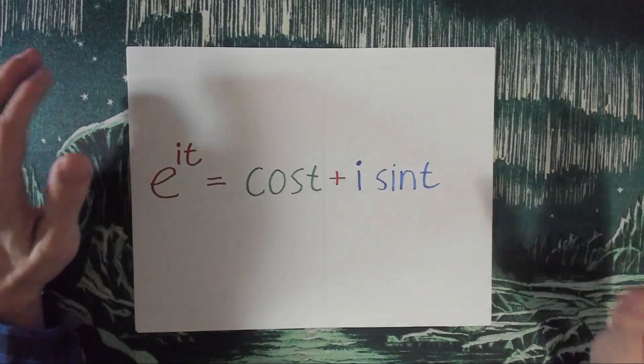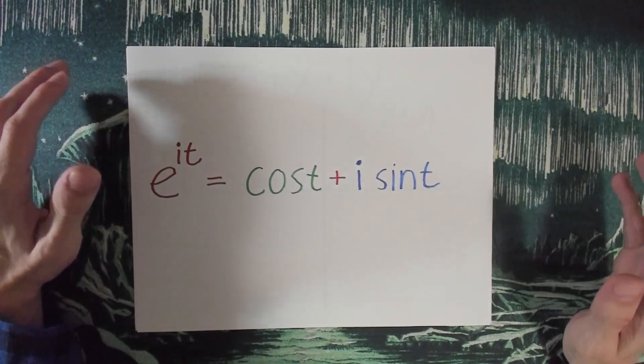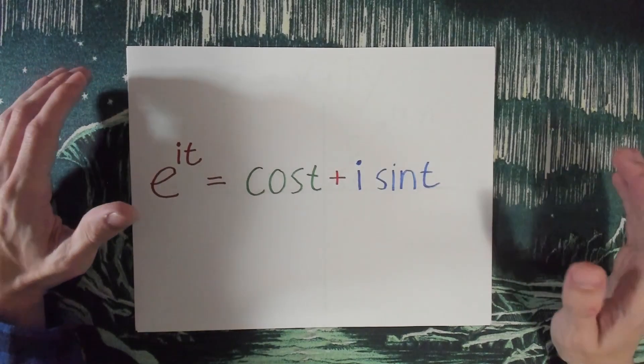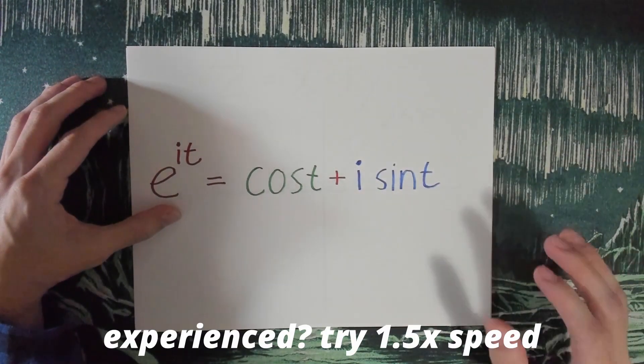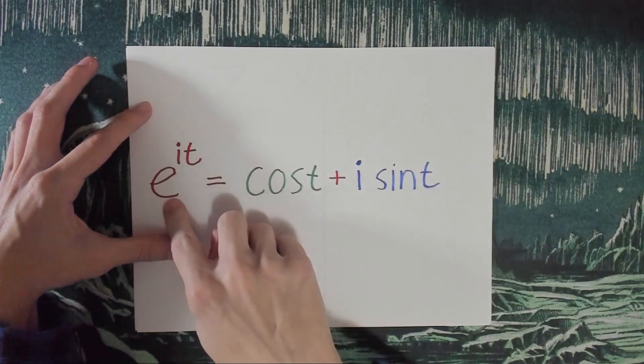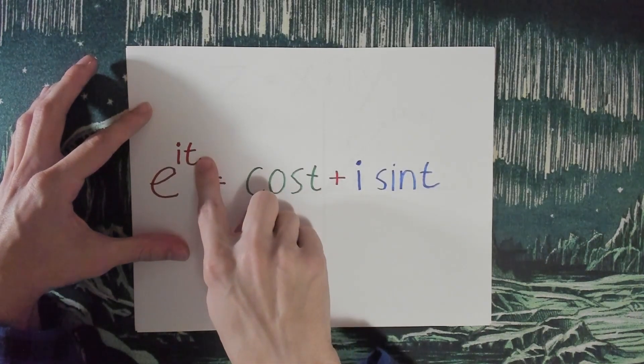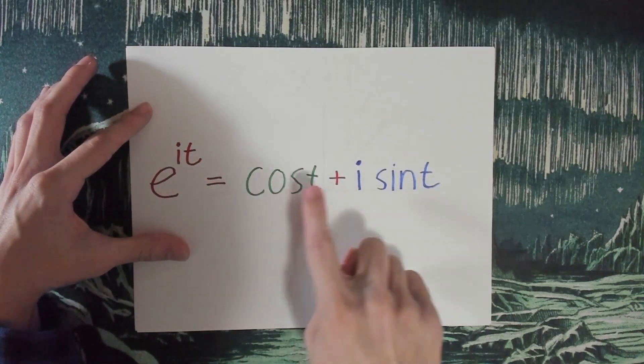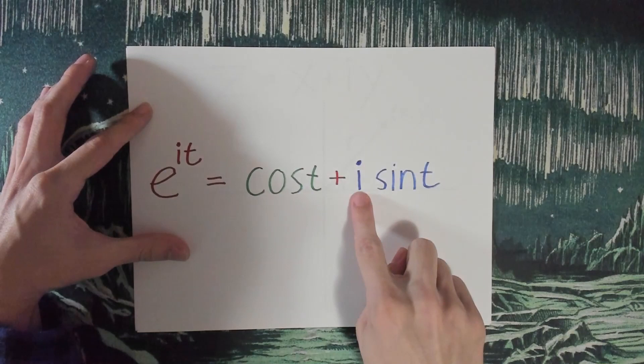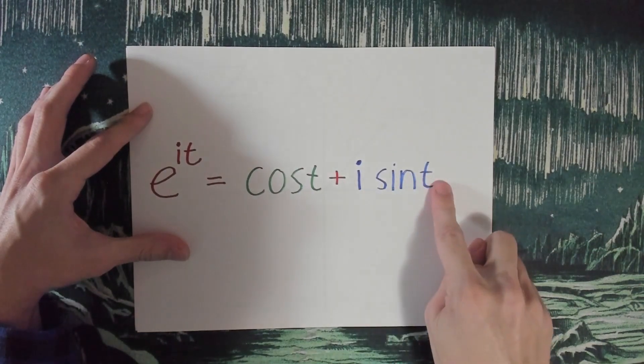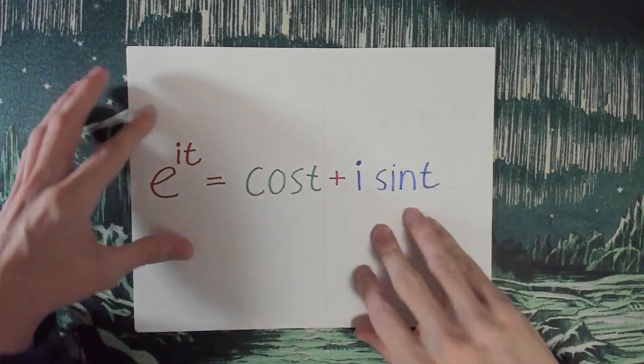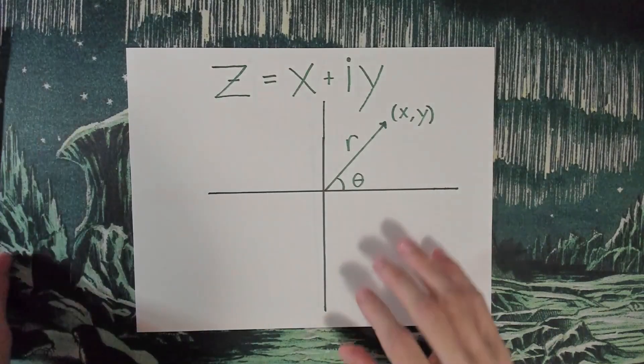Hey, what's up? Can Euler's formula be understood before calculus? Well, I'm going to give it a try. So e to the i times t equals cosine of t plus i sine of t. This is Euler's formula, and we'll get back to this soon.